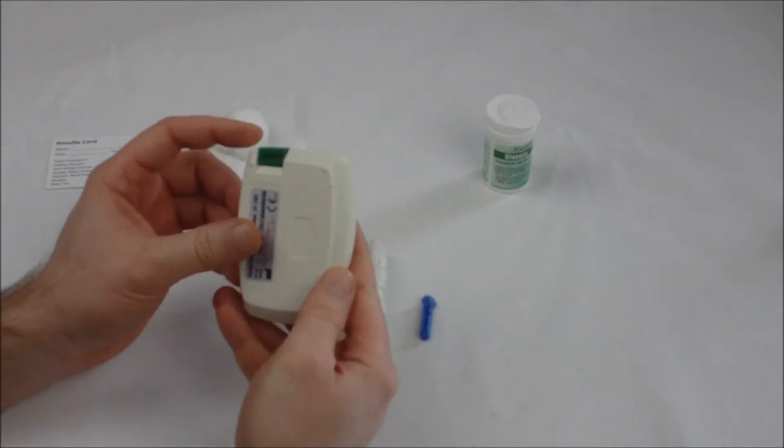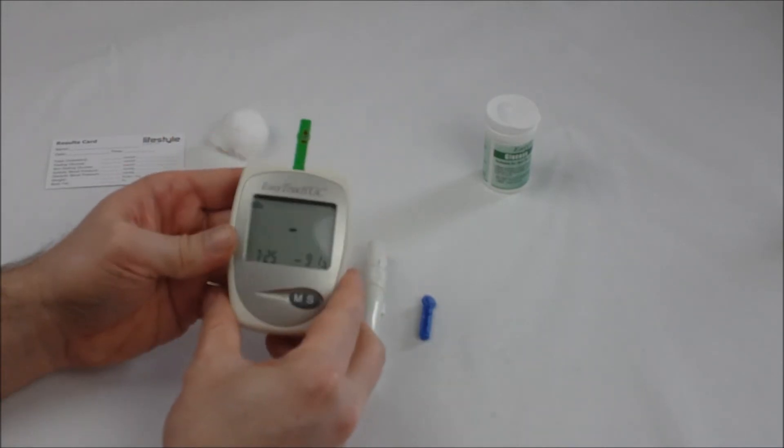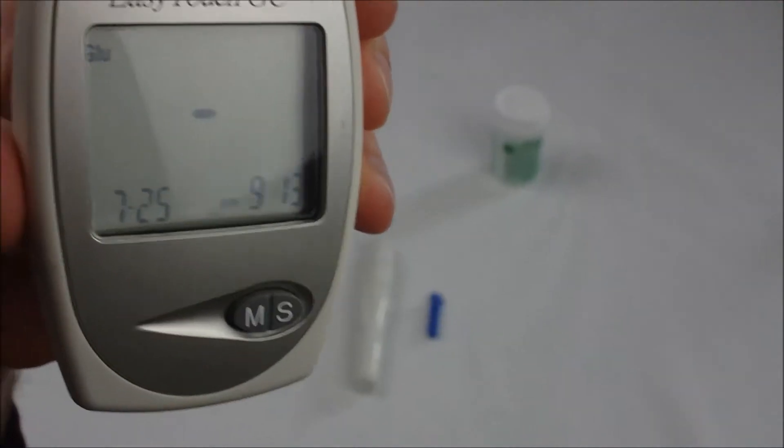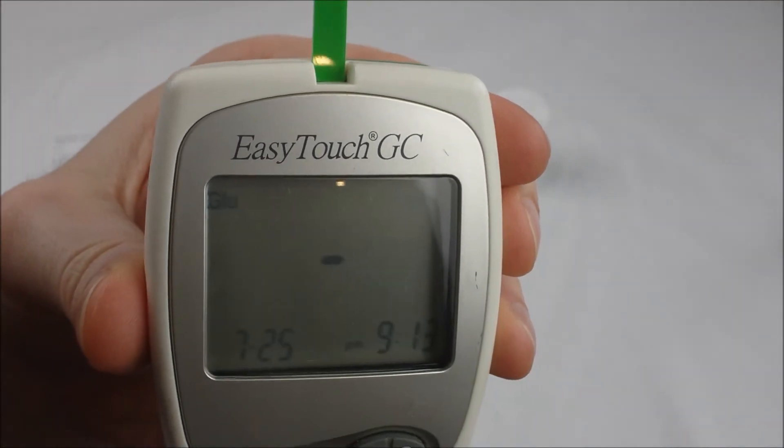That number should correlate with the number on your test strip and your code key. After that you'll see the blood drop symbol appear and your monitor will be ready to take the blood sample.